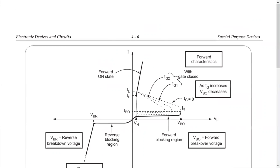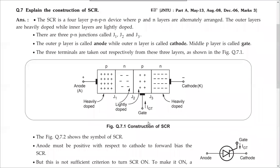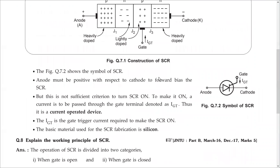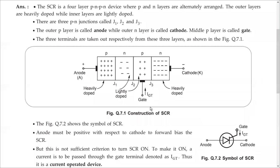Now, what about the control terminal? Usually we connect the gate to forward bias J3, connecting the positive terminal to the gate. When you give forward bias, will the current increase or decrease? Simple question — when we give forward bias, the current will increase.